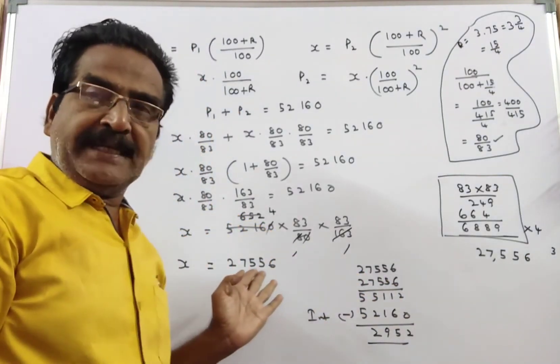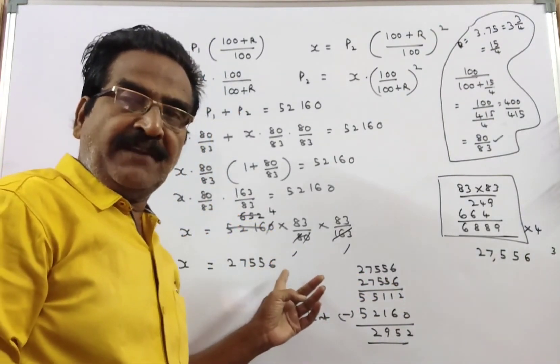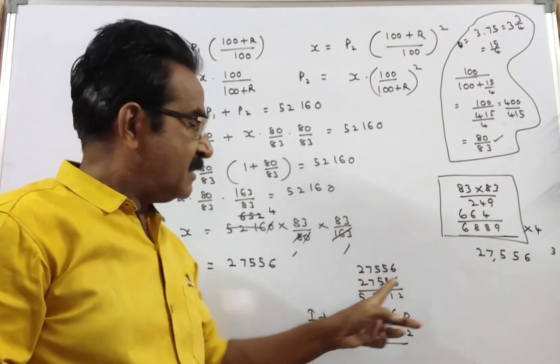Friends, each installment is 27,556. First installment and second installment.